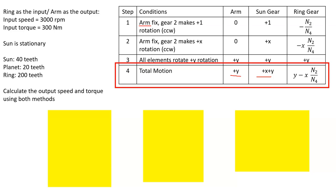We know the ring is the input, so we can set that equation to 3,000 rpm. We also know the Sun is stationary, so we set that to zero. We're trying to find the output for the arm. Note that Y shows up in all these equations, and we have two unknowns — X and Y — with these equations to solve simultaneously.